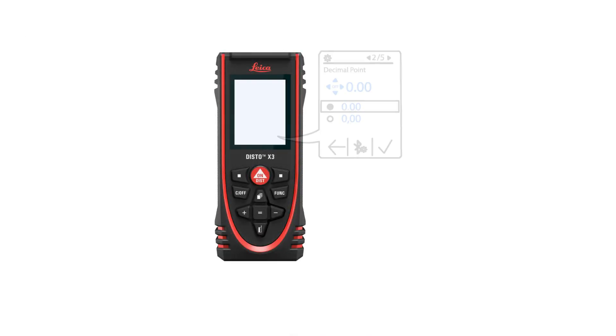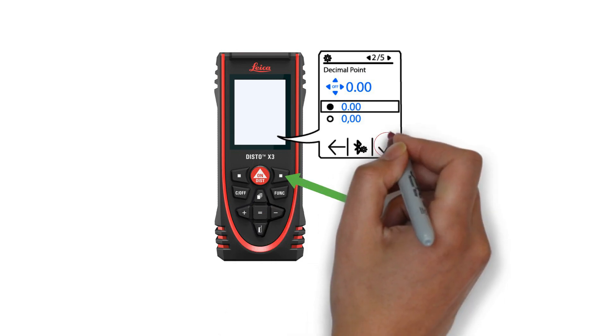The next item to configure is the decimal point setting, which will allow you to show a comma or decimal point between numbers. Most North American users will want a decimal point. Ensure the decimal is selected, then press the right selection key for the checkmark again.